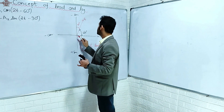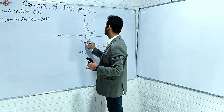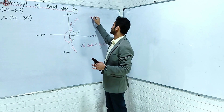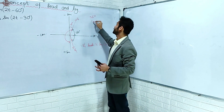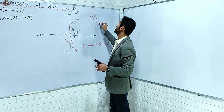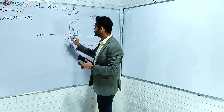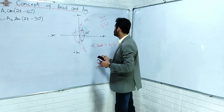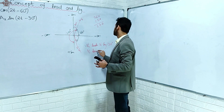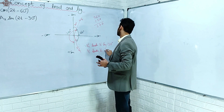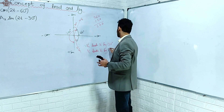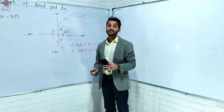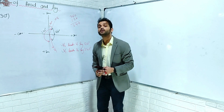And if this angle is 120 degrees, then what is the remaining angle? The total is always 360 degrees. So if V1 leads V2 by 240 degrees, that statement is also completely correct, sir. This statement is also absolutely correct.